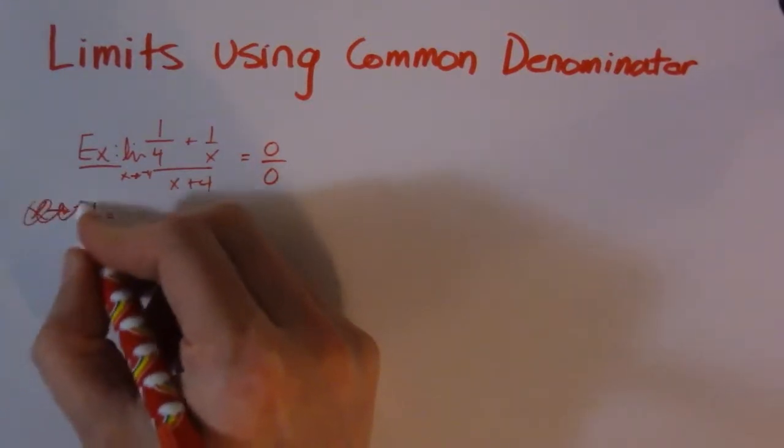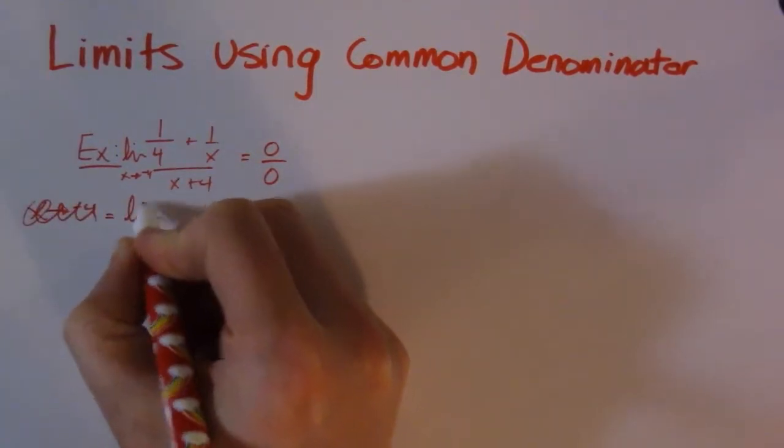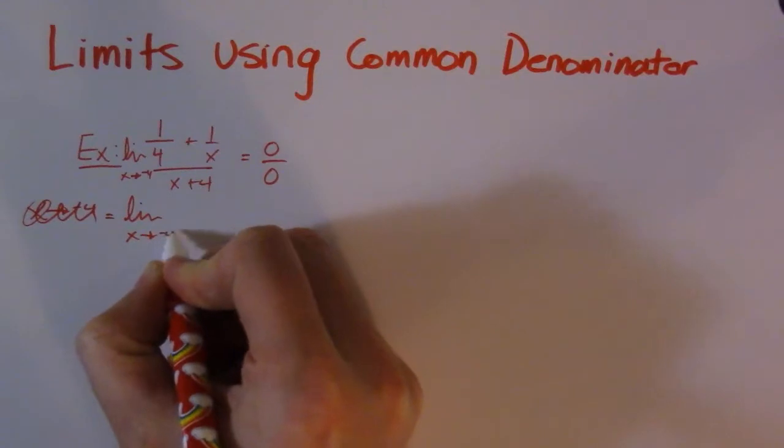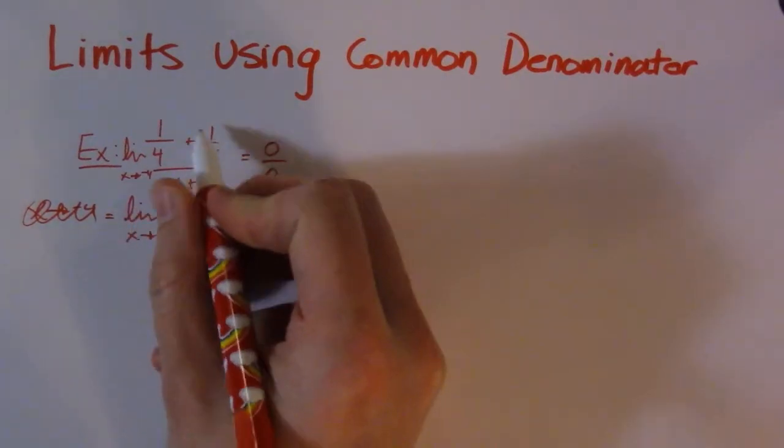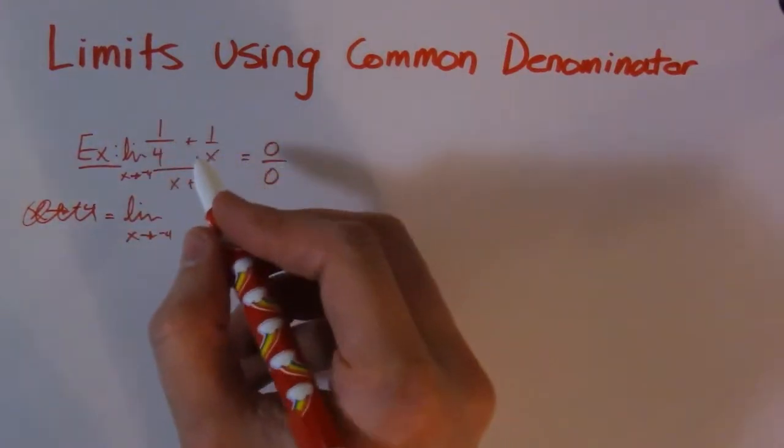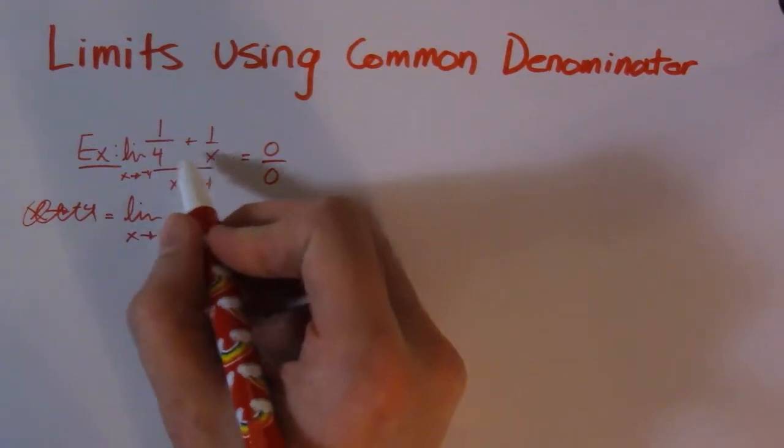So I'm going to rewrite this. The limit as x goes to negative 4. I'm going to find a common denominator for these guys in the top here. The common denominator is going to be 4x. So this guy needs an x,